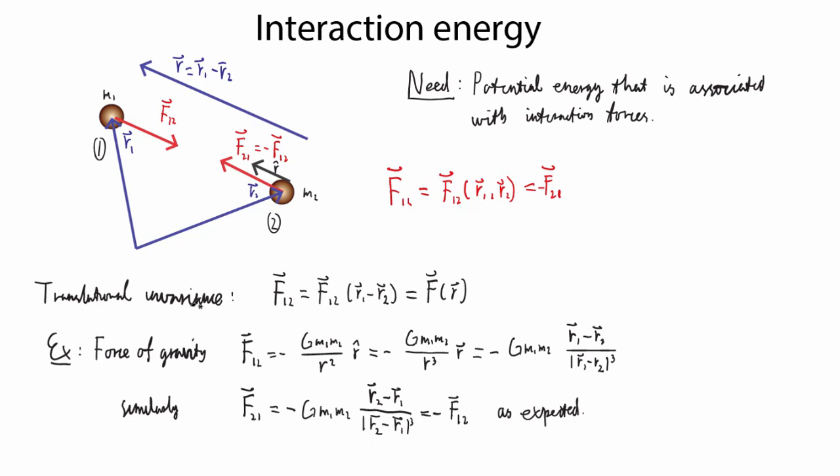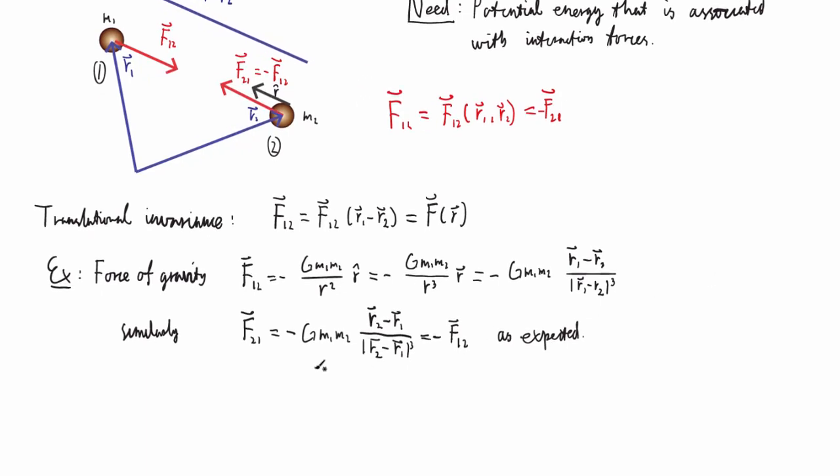Now, because we have translational invariance, I apologize for the handwriting, and because we have translational invariance, we can move the origin anywhere we like. So we are perfectly free to pick the origin such that the vector R2 is zero. And in that case, of course, we get that F12 will depend only on R1 explicitly, so that F12 is a function only of R1.